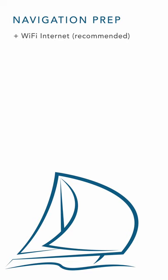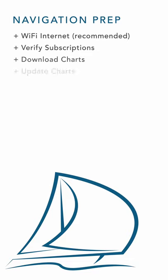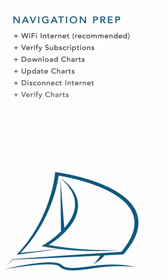Once I know the route of a passage, the process is as follows. First, I make sure that I'm connected to the internet using Wi-Fi. Then I verify I have the required subscriptions for the charts I need. Then I download those charts. Then I tell the app to update all of the charts that I previously downloaded. Lastly, I make sure I'm disconnected from the internet so that I can verify that I have all of the charts I need in an offline capacity.